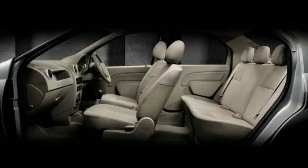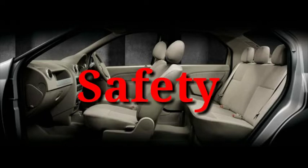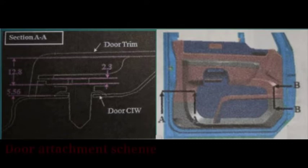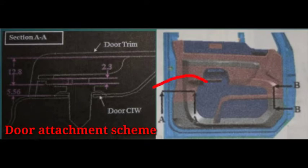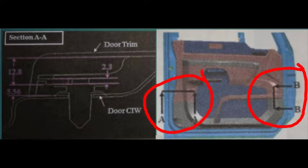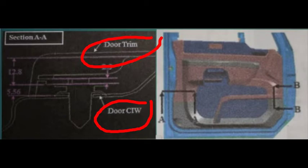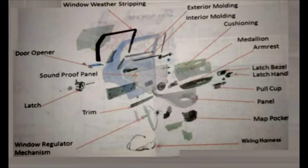A vehicle has two types of doors: front door and rear door. As we know, a major safety issue with opened vehicle doors is visibility at night. Now we are going to see the door trim attachment schemes. You can see in the image Section AA and Section BB — we cut those sections and can see the door trim and the door CIW. CIW means cab-in-white.